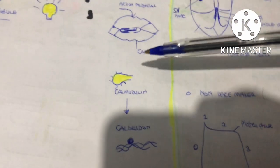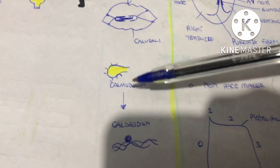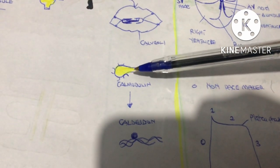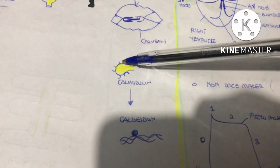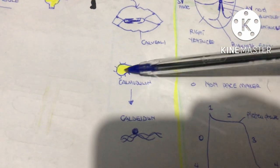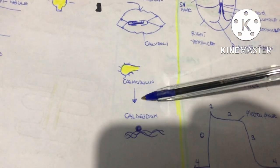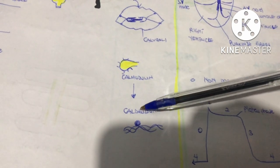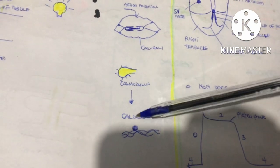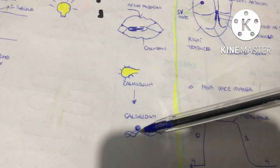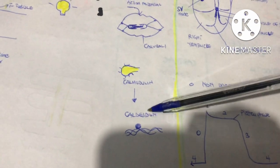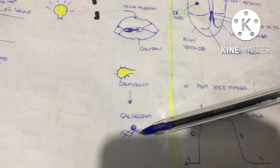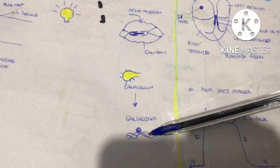In smooth muscle, the difference is that there is no troponin but there is calmodulin. Calcium binds to calmodulin (four calcium ions), forming a calcium-calmodulin complex that goes and activates caldesmon. Caldesmon is attached to tropomyosin, and when activated it undergoes a conformational change, causing tropomyosin to also change conformation, thereby exposing the myosin binding sites.